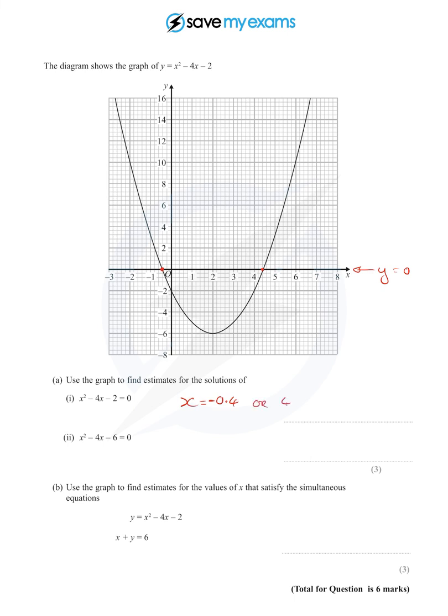Now what is going on with the next one? We've got something very similar to the one above but actually it's x² - 4x - 6 = 0. And the way we deal with these is we make that look like x² - 4x - 2 and we have to see what happens.